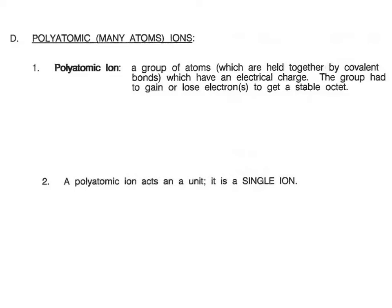The group had to either gain or lose electrons to become a stable octet. That's the only way it will form, and now it has a charge and it will bond to something with the opposite charge. Polyatomic ions are a single unit and act as if they were a single ion. So while the whole thing has a two-negative charge, that means not every single atom has two negative charges — the whole group would be a two-negative.